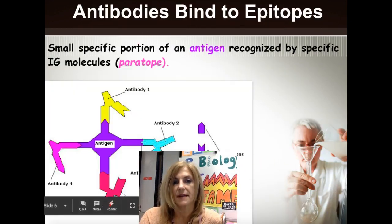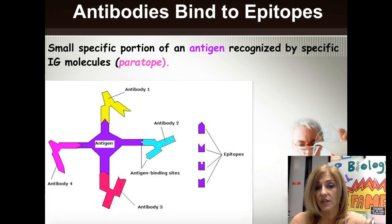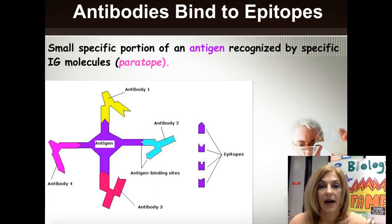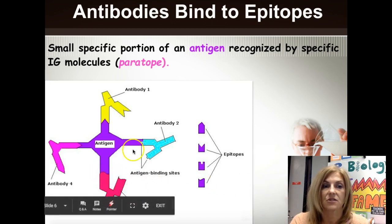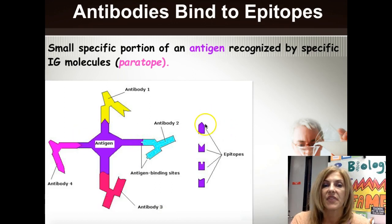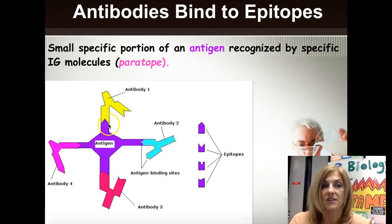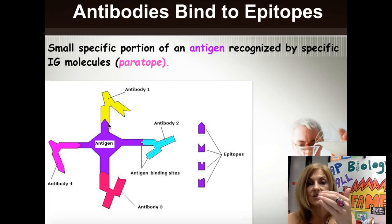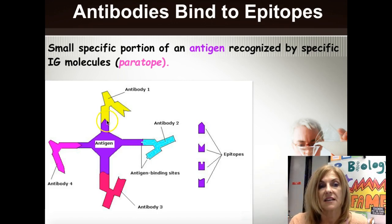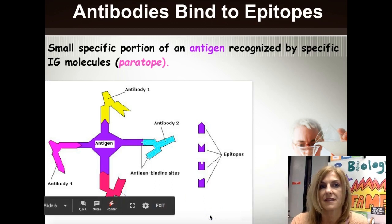To describe these shapes more precisely, we use the words epitope and paratope. 'Epi' means above or upon, so the epitope is found on the antigen itself — those binding sites, whether squiggly, puzzle-piece-shaped, or V-shaped. The antibody has a matching shape called the paratope; 'para' means around, so the paratope fits around the epitope. Using these specific terms makes it much easier to communicate clearly about these binding interactions.